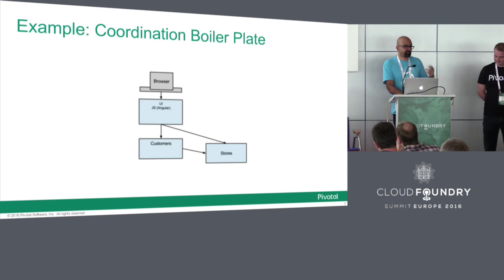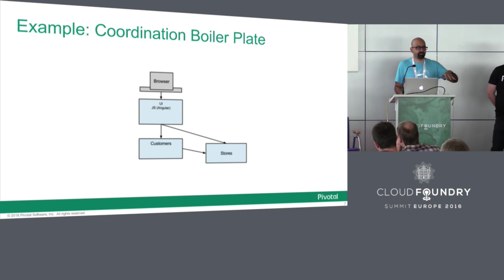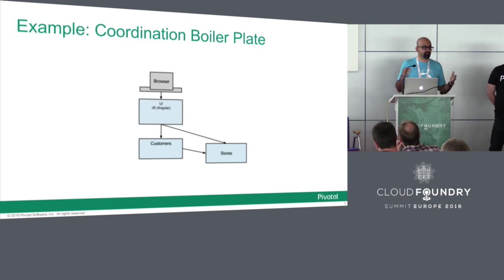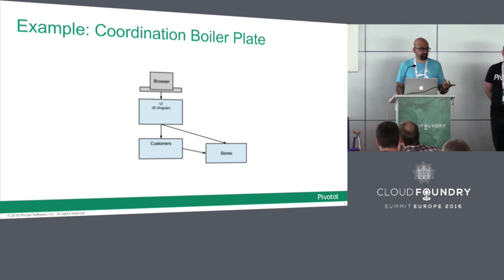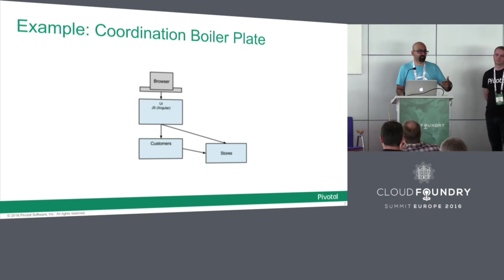Consider an application made up of three microservices: a web front-end, two back-ends in different domains — one for customer data, one for stores data. There are clearly dependencies. They're loosely coupled but need to know about each other. How does customers know where stores is running? How does the web front-end know where customers and stores are running? What happens if stores goes down — does the whole application die? That's not good practice.